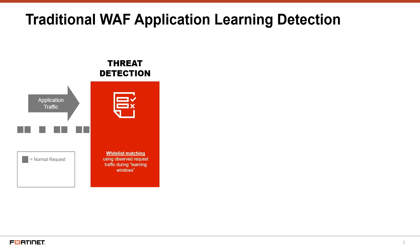On the left is a traffic stream of application requests. The squares represent normal user requests. The circles represent benign anomalies — these could be typos or new characters that haven't been observed previously by the application learning process. Finally, the triangles represent threats.